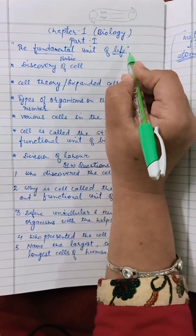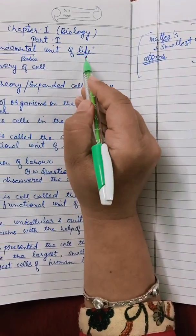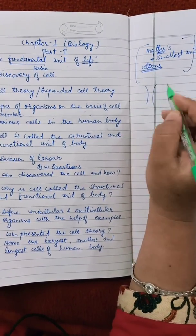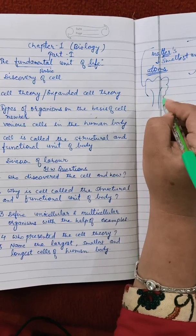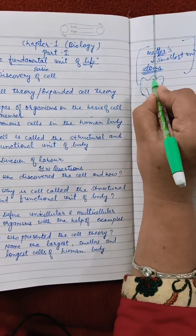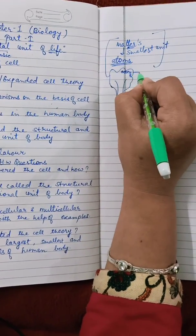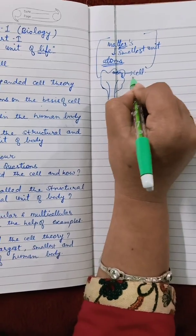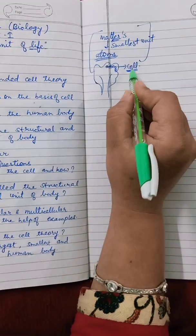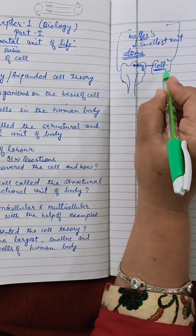Life means about living things. In living things, what is the fundamental unit? We will take the example of a tree. A tree has a big structure, and what is the smallest unit of this big structure? That is known as the cell. Cell is the smallest unit, which is also known as the basic unit of life.